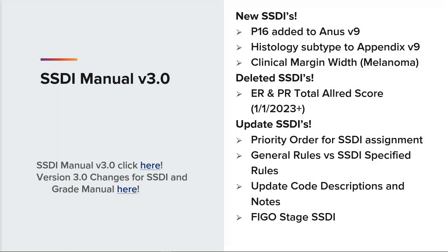There were new SSDIs for version 3.0, also found at the CRRSA site. P16 is an existing SSDI but was added to the anus version 9 schema, as well as the histology subtype appendix version 9 schema. New for 2023 is the SSDI clinical margins for melanoma. The clinical surgical margin should be coded from the operative report, not from the path report. No longer required for 2023 cases are the ER and PR Allred scores. Continue to collect these for pre-2023 cases, and facilities may still collect them after 2023 if they wish, but they are not required.